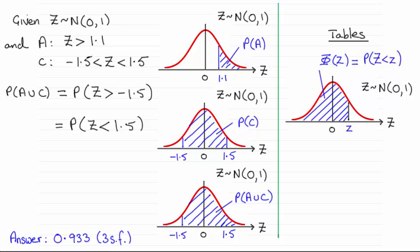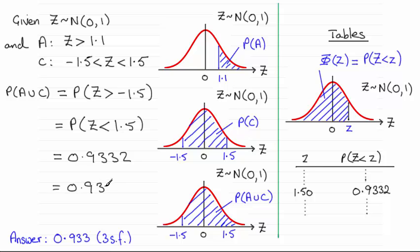And if you look at your tables, the probability of being less than 1.50 is 0.9332. So you've got this as 0.9332, and to three significant figures, that's going to be 0.933.